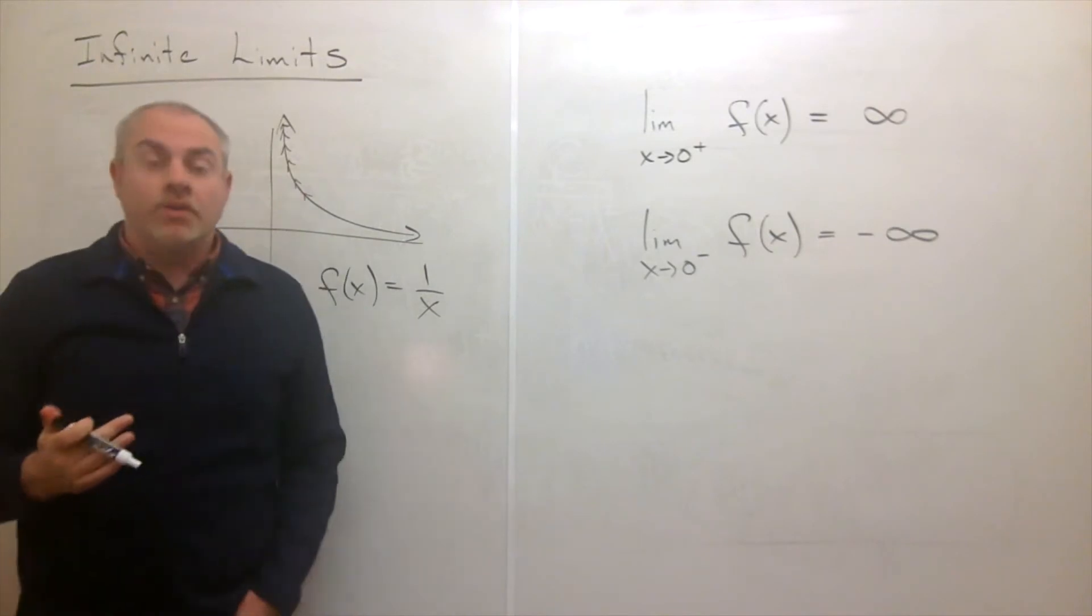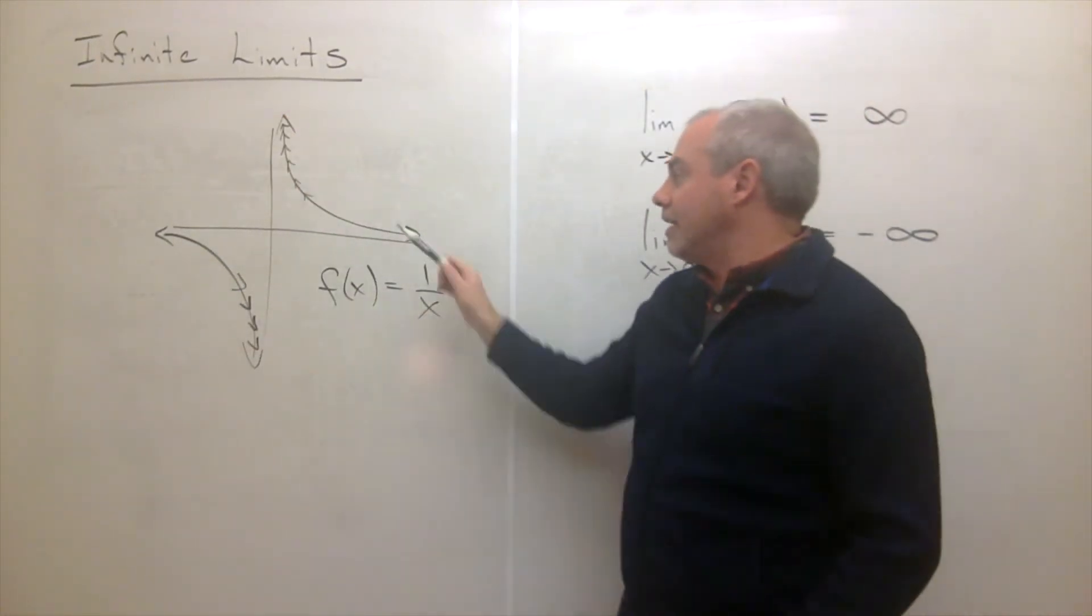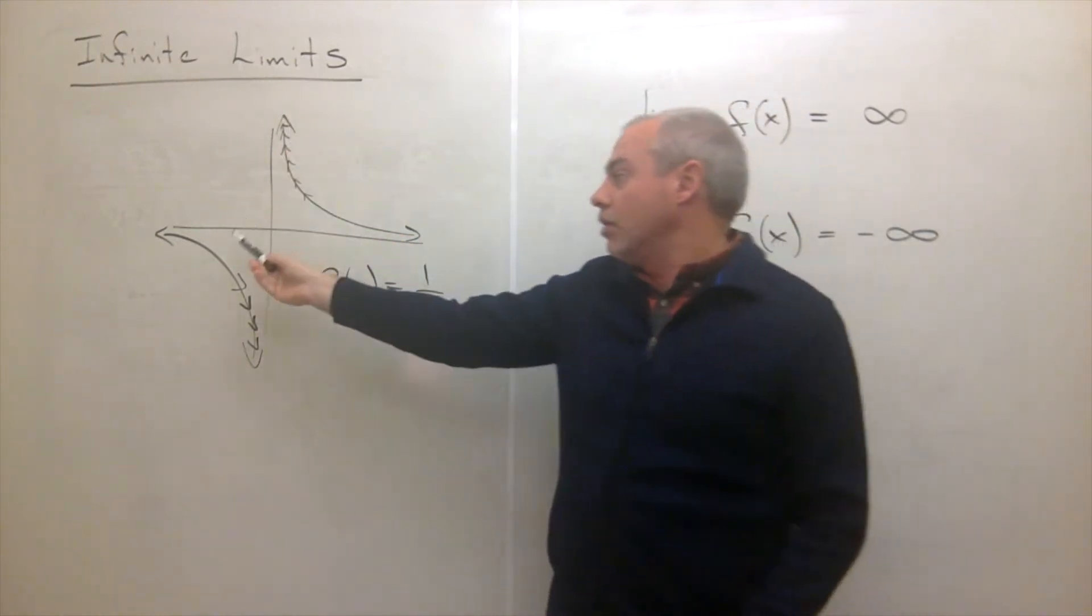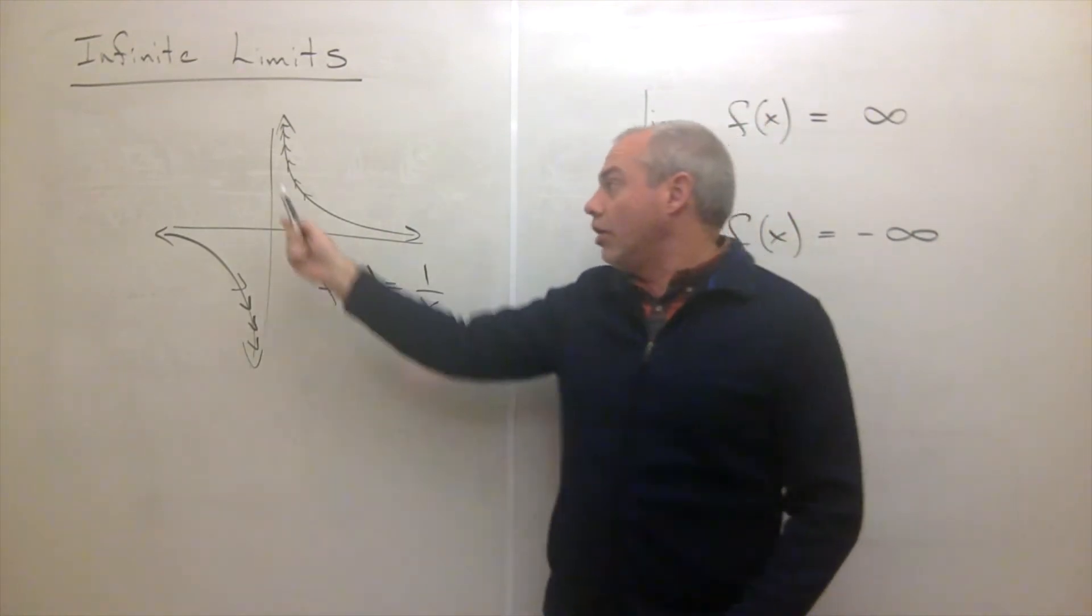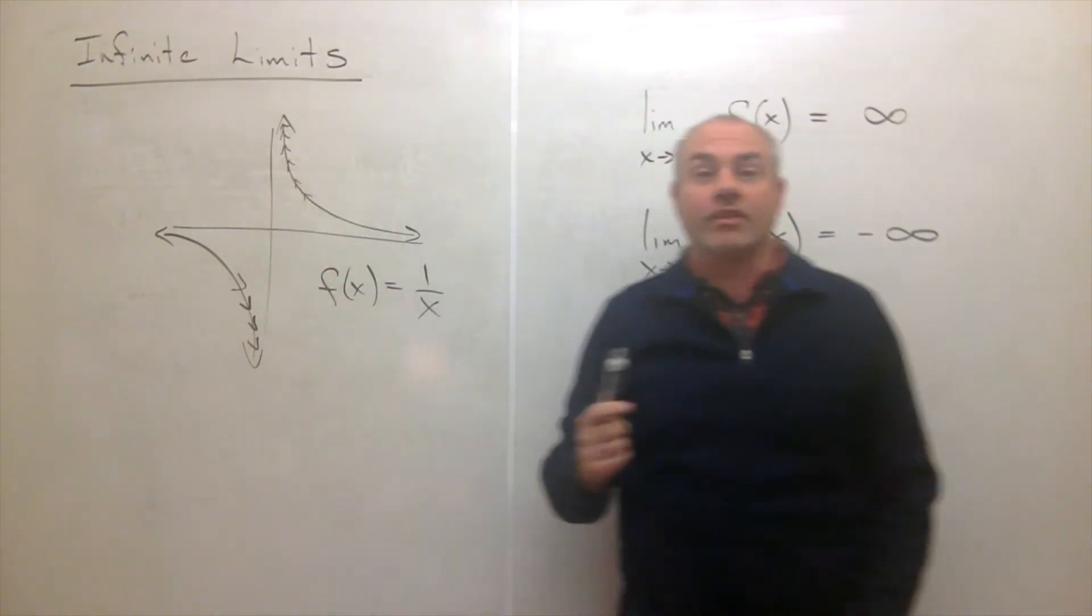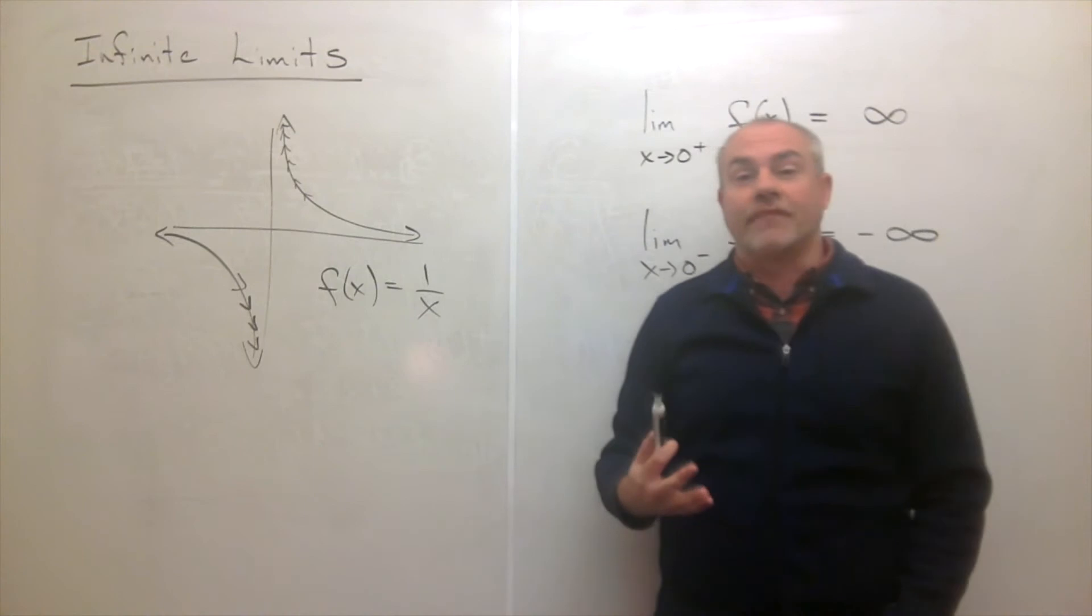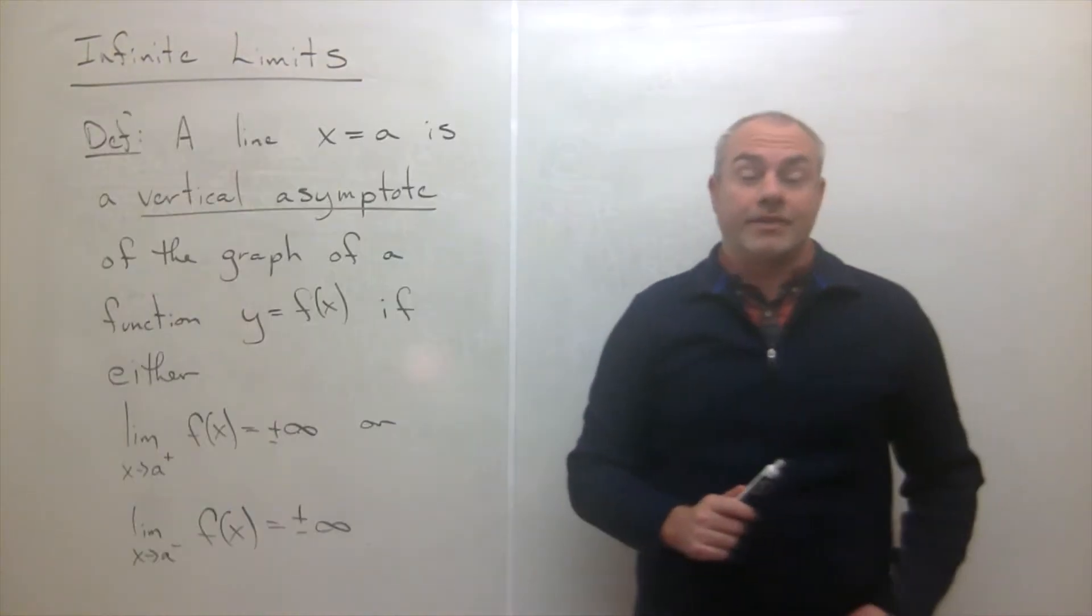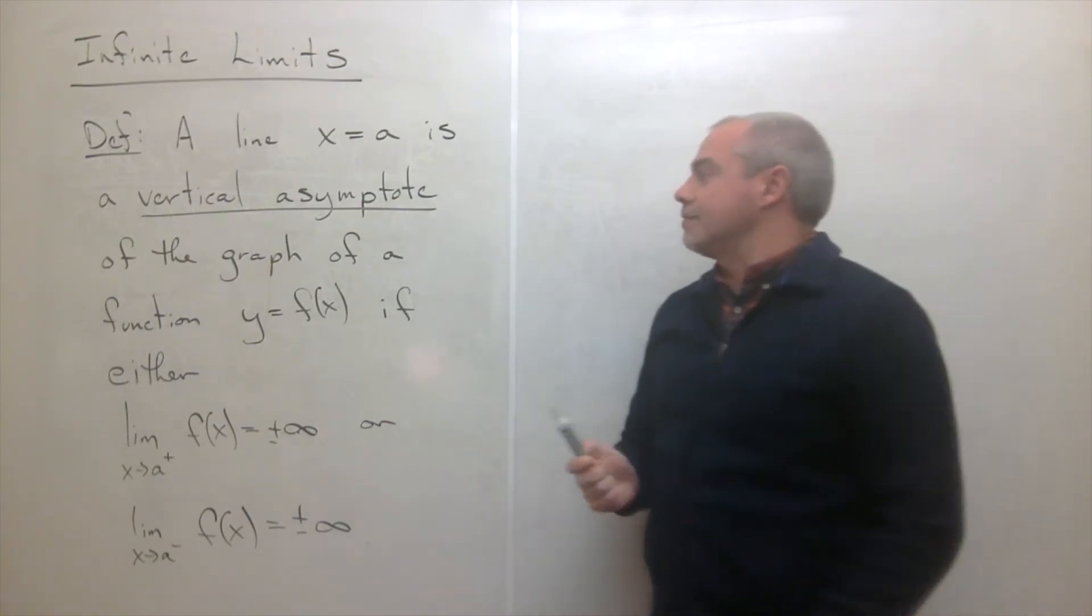So where does this sort of thing happen? Where do I get limits where I get values of infinity or negative infinity? When I get values like that, I call these points at which I get those limits vertical asymptotes. So really quick, let's write down a definition of a vertical asymptote.